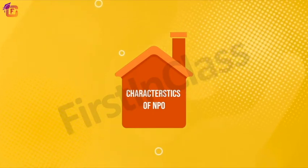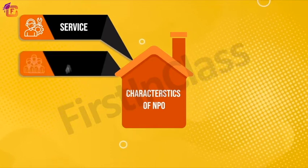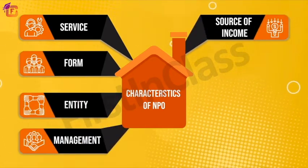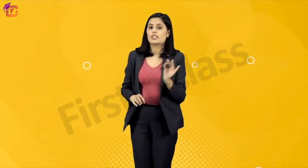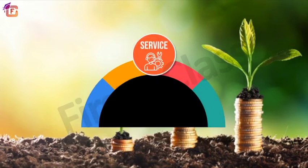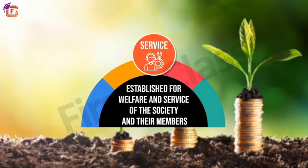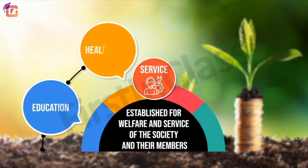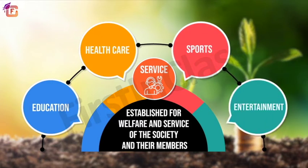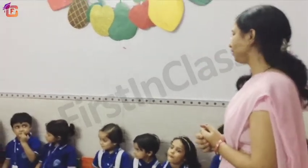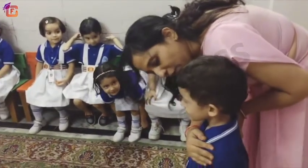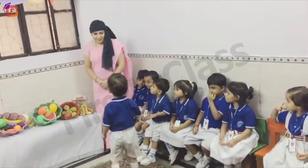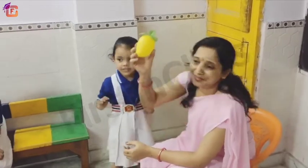Taking a look at the characteristics of NPOs — these are: service, form, entity, management, source of income, surplus, and accounts. The first characteristic is service: NPOs are established for welfare and service of the society and their members, such as education, healthcare, sports, and entertainment. The main aim of these organizations is to provide service either free of cost or at nominal rates, and they do not operate with the objective of earning profit.